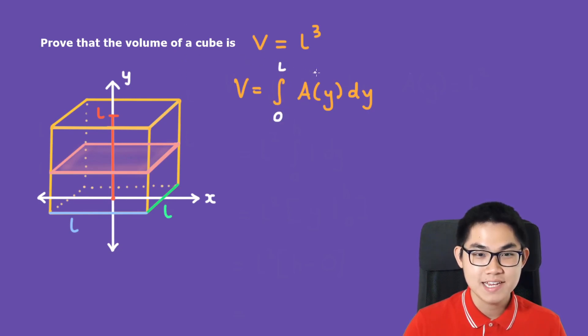The second step is to find A of Y, which is the area of the cross section. So A of Y is equal to what? Well, the area of the cross section, which is a square, is L to the power of 2.